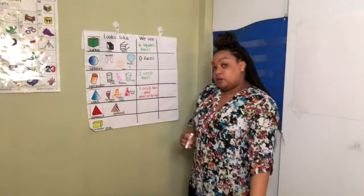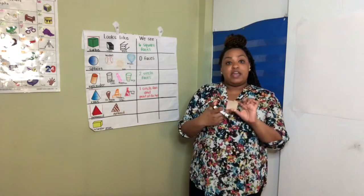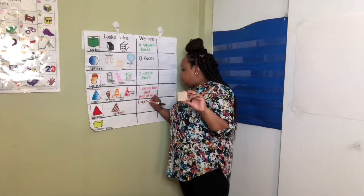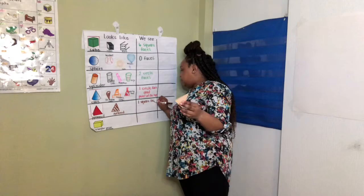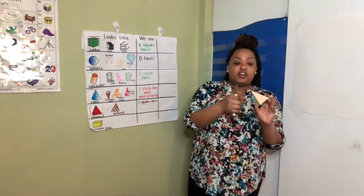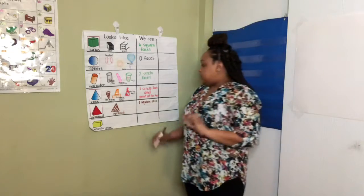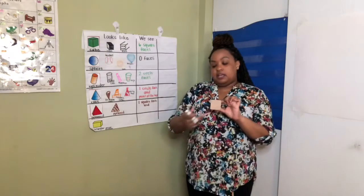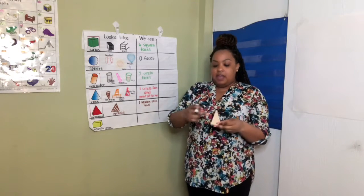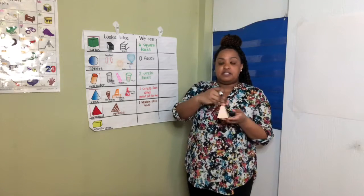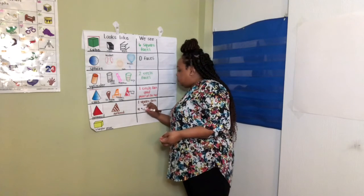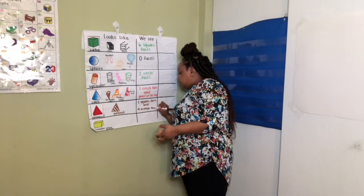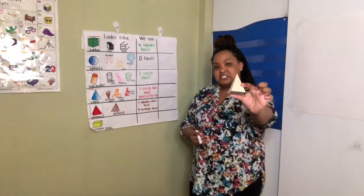Now what makes a pyramid special? It has one square bottom, so it has one square face. And then it has four triangle faces. So anytime you see a pyramid, which isn't very common, it has a square face at the bottom and then four triangle faces all around. This is a pyramid.